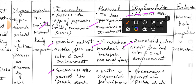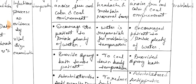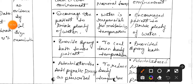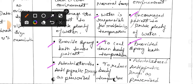Third intervention: encourage the patient to drink plenty of water. Rational: water is responsible for maintaining temperature. Implementation: encourage patient to drink plenty of water. Fourth intervention: provide a sponge bath to the patient. Rational: to cool the body temperature. Fifth intervention: administer antibiotics and antipyretics to treat the fever.